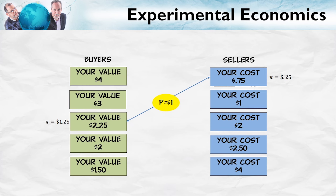Similarly, the buyer would earn their value — $2.25 in this case — minus the price of $1, for a profit of $1.25. Here was another key to Smith's market: he actually paid the traders their profits in real money. So Smith's experimental market was a real market with a real demand curve, a real supply curve, and traders who had an incentive to maximize the gains from trade.